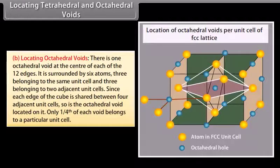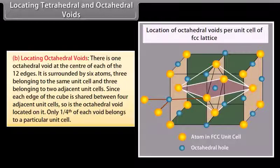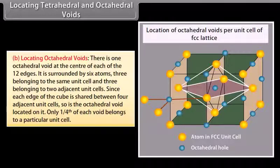To locate octahedral voids: there is one octahedral void at the center of each of the 12 edges, surrounded by six atoms — three belonging to the same unit cell and three belonging to two adjacent unit cells. Since each edge of the cube is shared between four adjacent unit cells, only one fourth of each void belongs to a particular unit cell.